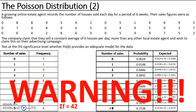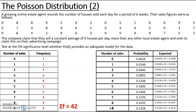Big warning here: the expected values must be 5 or more. Looking at the expected values, the first four categories are all less than five, and there is also a value of 4.3344 at eight sales. So I need to make some sensible combinations to rearrange my table.